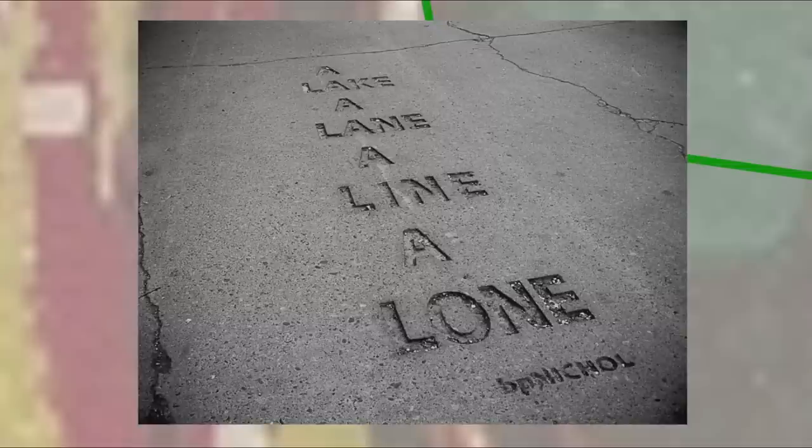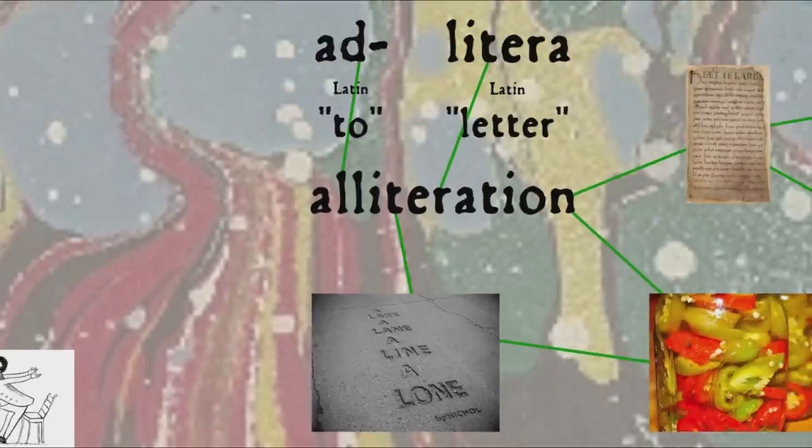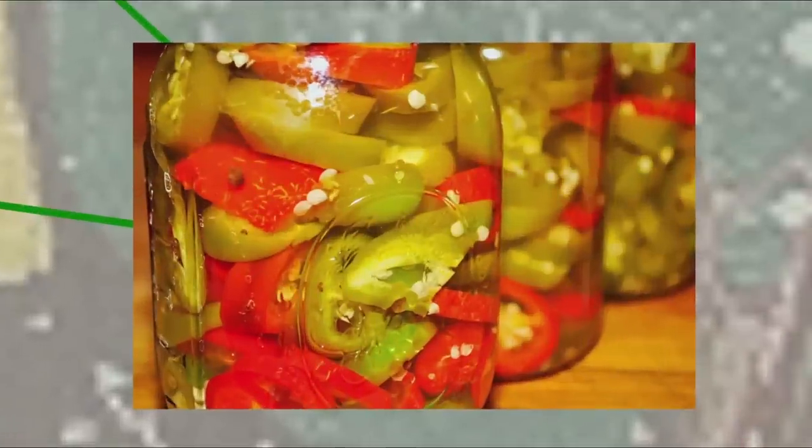However, this isn't the only way you can use repetition of sounds to organize poetry. When you repeat the sounds of beginnings of words it's called alliteration, literally to the letter, as in Peter Piper picked a peck of pickled peppers.